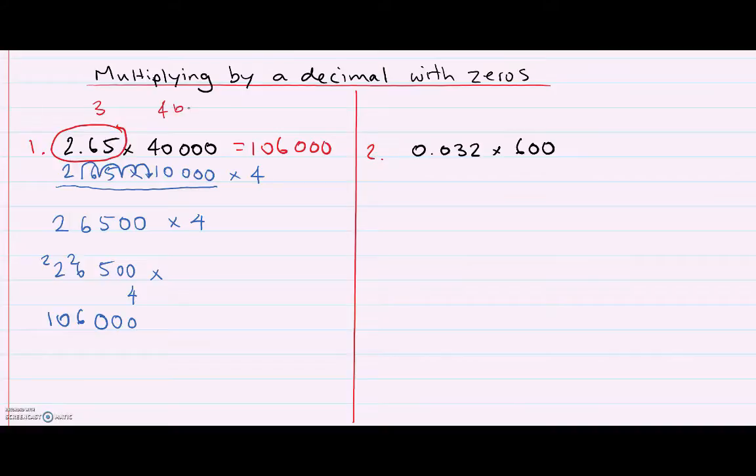So I'm going to have three 40,000s, which is about 120,000. But I know that my answer is going to be less than that because I'm not quite multiplying by 3, I'm multiplying by something less than 3.